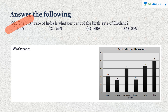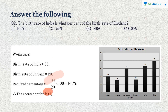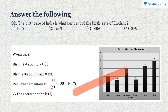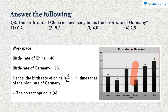Question 2: The birth rate of India is what percent of the birth rate of England? India is 33 and England is 20. So (33/20) × 100 = 165%. Option 1. Question 3: The birth rate of China is how many times that of Germany? China is 40 and Germany is 16. 40/16 = 2.5. So China's birth rate is 2.5 times that of Germany. Option 4.